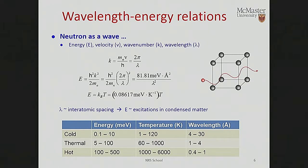The power of neutron scattering for inelastic work comes from the relationship between the energy of the neutron and its wavelength, completely determined by the mass of the neutron. If you changed the mass, you'd change this relationship — but we can't change the mass of the neutron. The wavelength basically determines how useful the neutron is and how it's applied in diffraction experiments, which are how we know about the structure of matter on length scales we can't otherwise see.